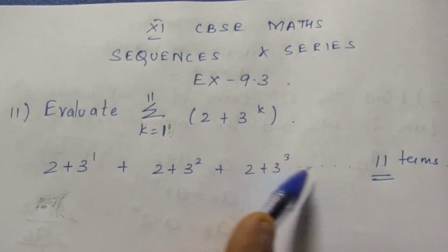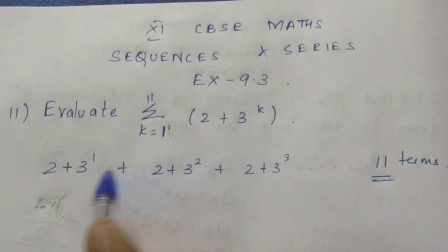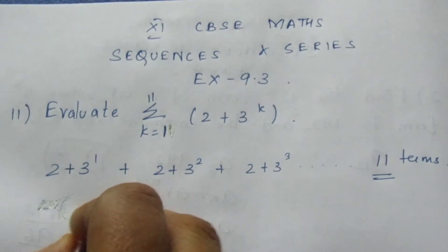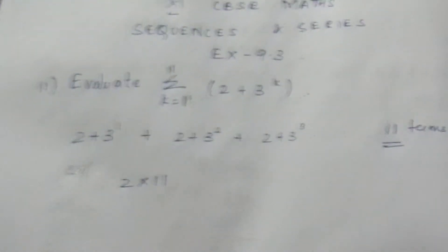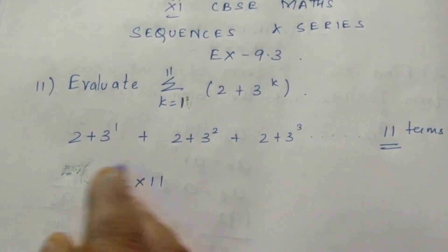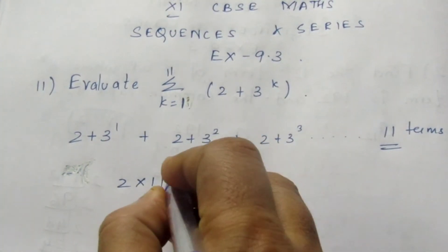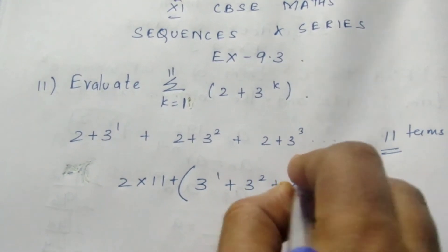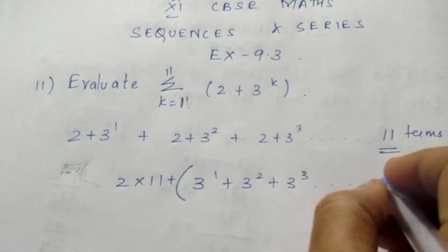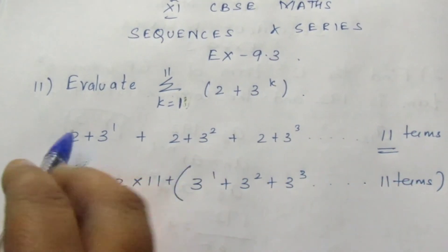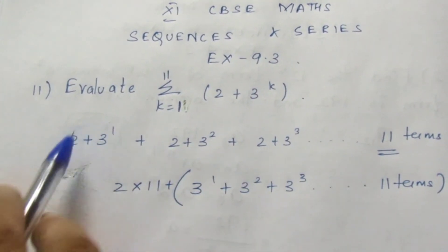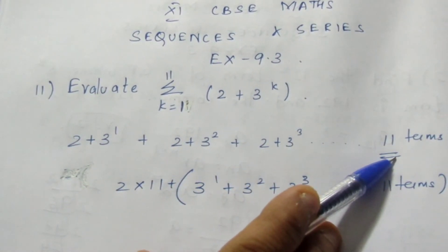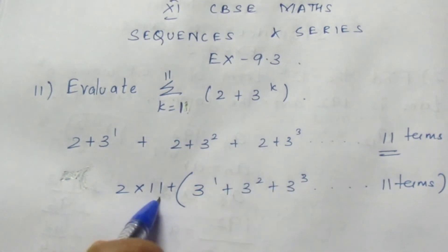Now we have 2 in all the terms — till 11 terms we will have 2 in each term. Taking 2 out from all the terms, there are totally 11 twos, so taking 11 twos outside we get 22. So it is 11 into 2 which equals 22.